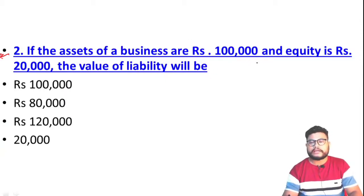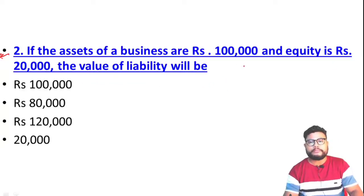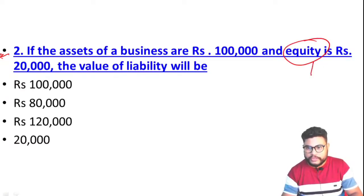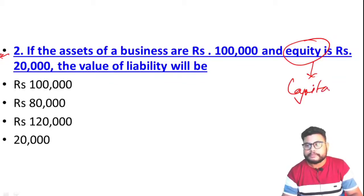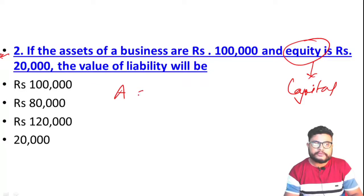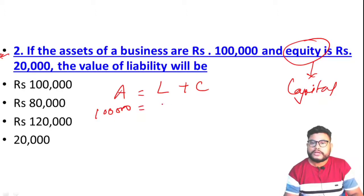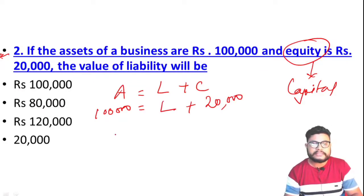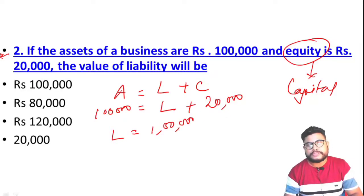Next question: If the assets of a business are one lakh and equity is rupees 20,000, the value of liability will be? Note that equity means capital. We know Assets equal to Liabilities plus Capital. Assets given are one lakh, capital is 20,000, and we need to find liabilities. Rearranging the equation: Liabilities = Assets minus Capital = 1,00,000 minus 20,000.